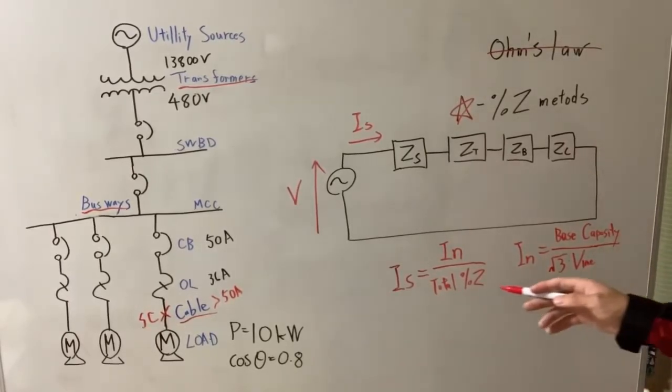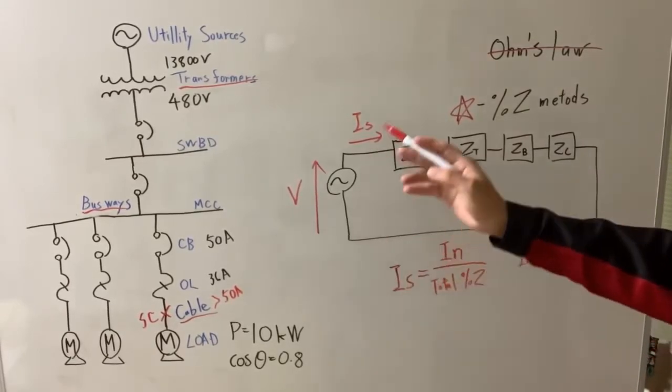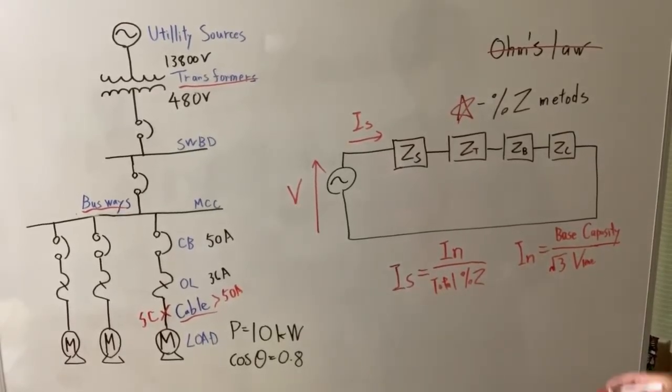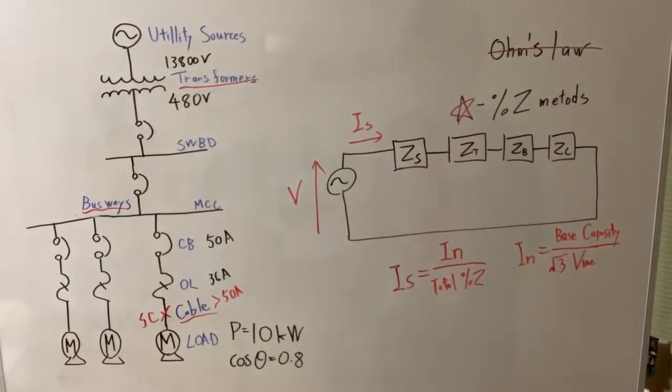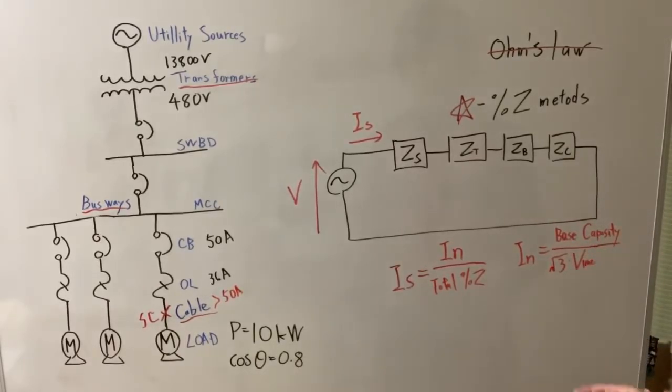The base line voltage is the voltage at the point of short circuit occurred. So in this case, 480 volt. So the base capacity is arbitrary, you know, it's up to you. You can select it. And once you set this base capacity, no matter how many transformers you have, you don't need to convert each one. You know, just apply this formula.